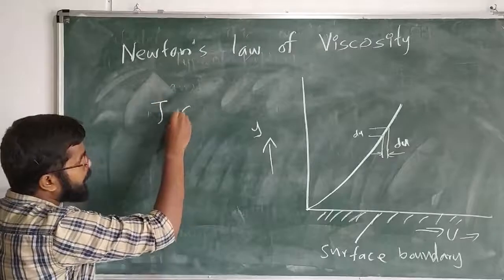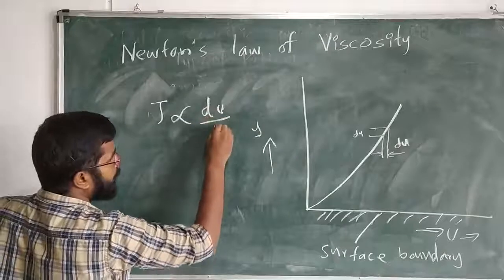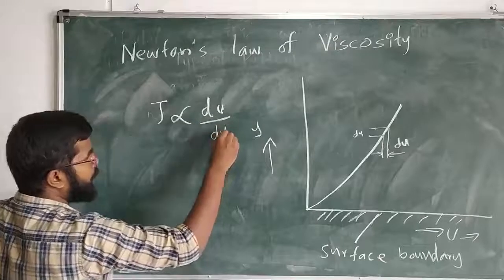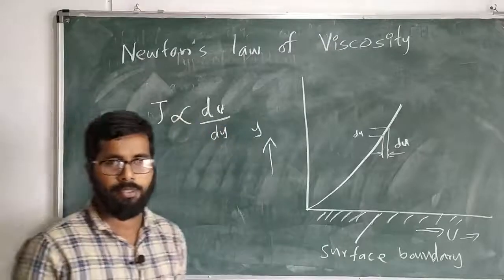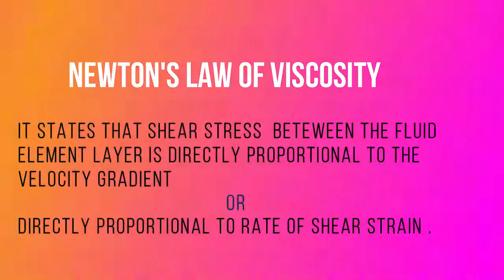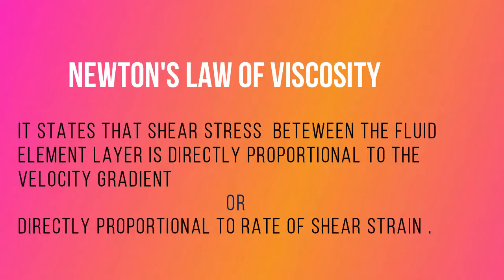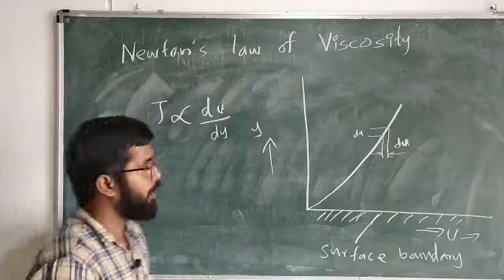The shear stress is directly proportional to the velocity gradient. The two layers are higher than the liquid layer. The shear stress is proportional — the velocity and the gradient are proportional.